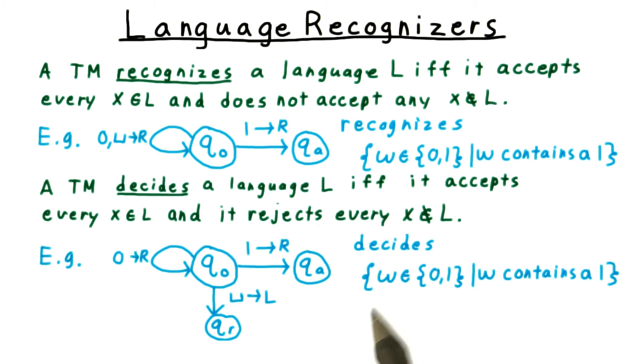If we wanted to build the decider for this language, we would need to modify the Turing machine so that it detects the end of the string and moves into the reject state like so.